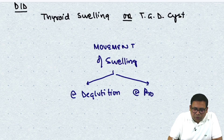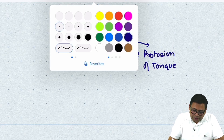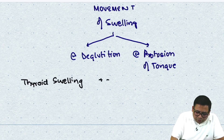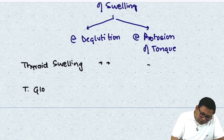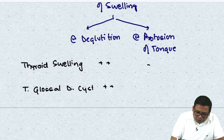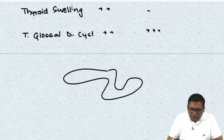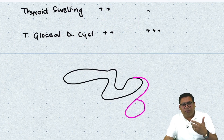The movement of swelling must be assessed with respect to two things: deglutition and protrusion of the tongue. If it is a thyroid swelling, it will move with deglutition but will NOT move with protrusion of the tongue. However, if it is a thyroglossal duct cyst, it will move with protrusion of the tongue as well as deglutition, because the thyroglossal duct cyst is connected with the base of the tongue.